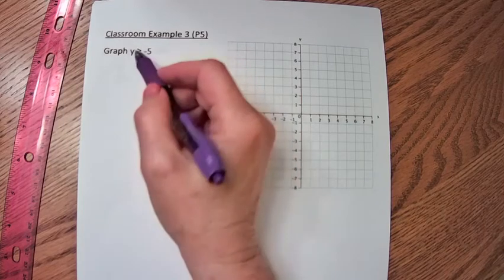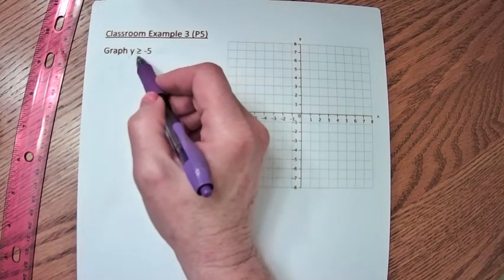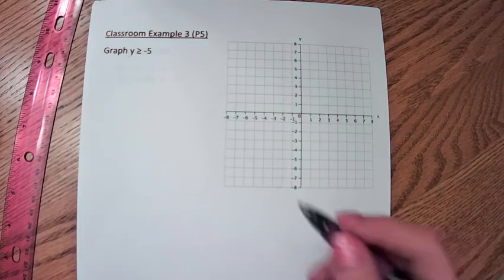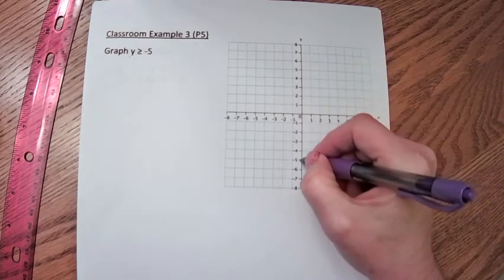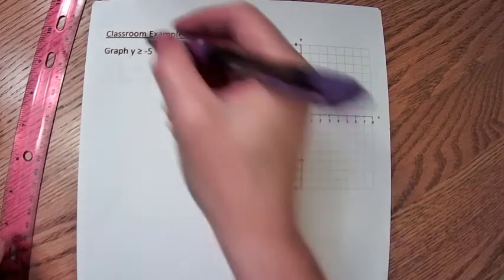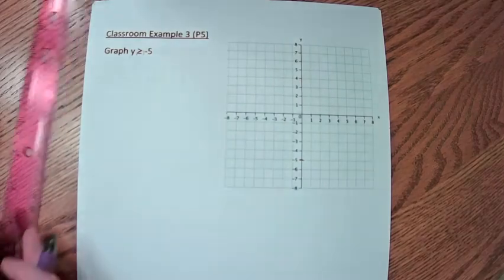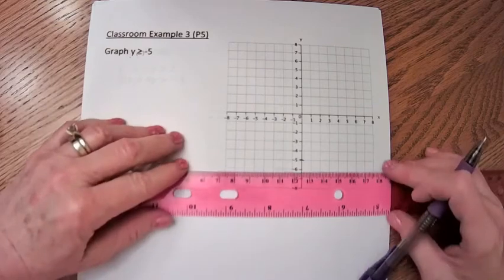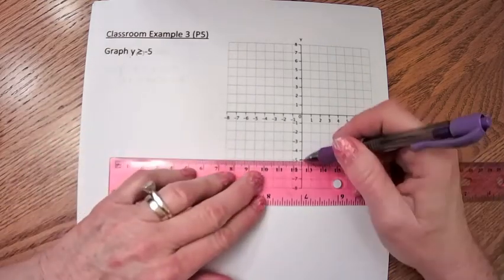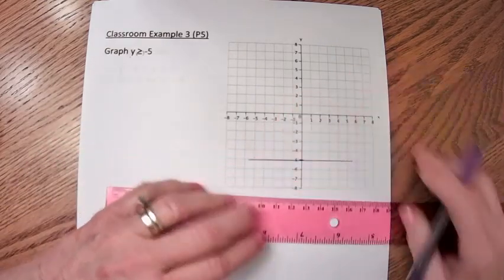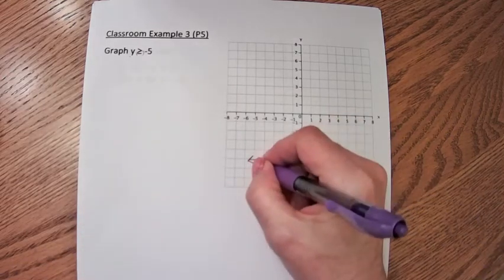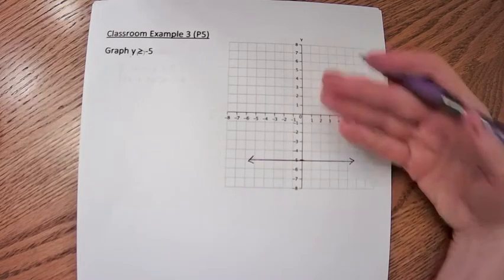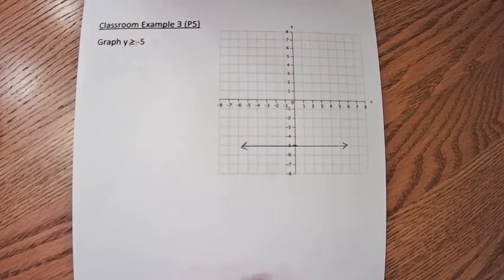Here we want to graph all the y's that are greater than or equal to negative 5. Here's y equals negative 5. Because of the equal sign, this is going to be a solid line. We're going to graph this line. Now we have to decide: are we going to shade above or below the line? What's the half region?